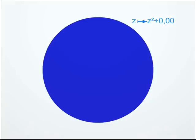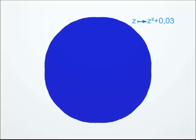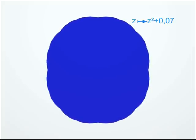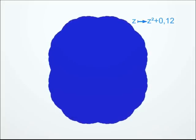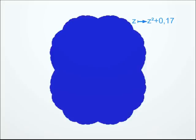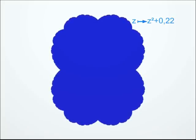But we can play the same game with other transformations. Like, for instance, those of the form Z squared plus C, where C is a complex number that we can choose at will. For each complex number C, we therefore have a Julia set, whose shape changes when C changes. You can see a few examples here.